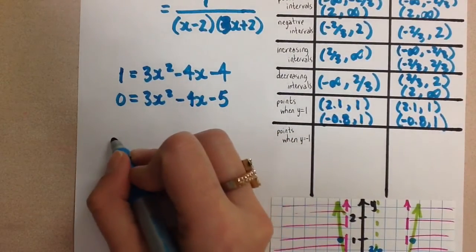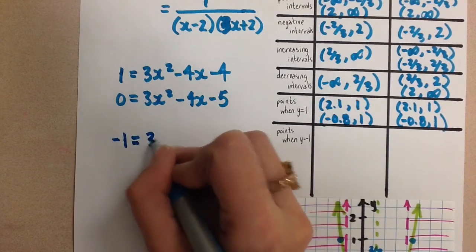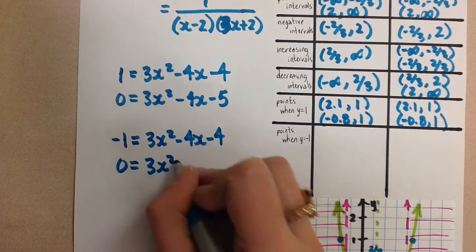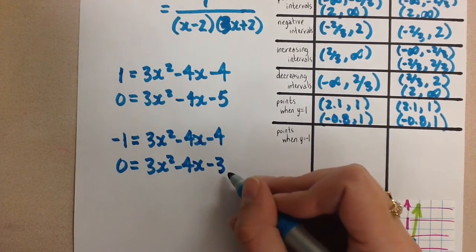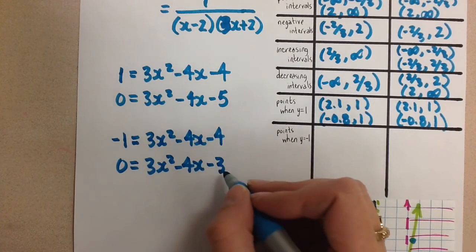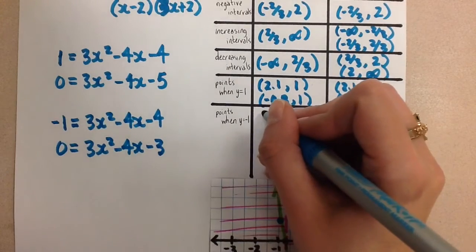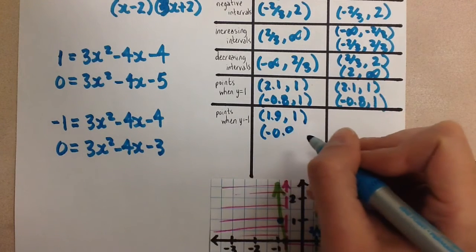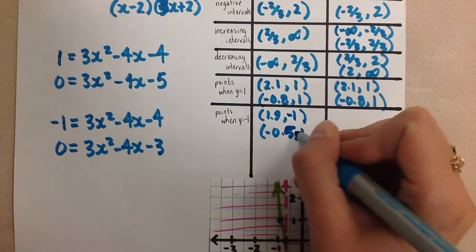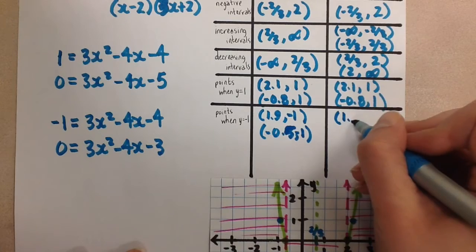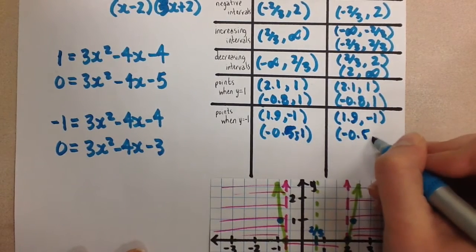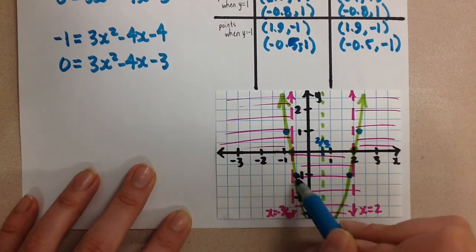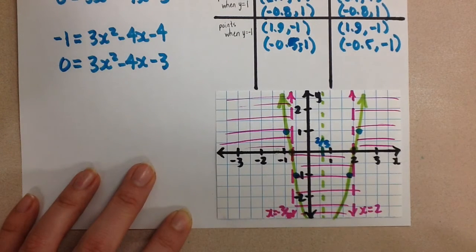For when y equals negative 1, we do the same thing — substitute in and bring the 1 over to get a quadratic equation on one side. Again you can't factor it, so you use the quadratic formula to find the two x values. When you do that calculation, your points are approximately (1.9, −1) and (−0.5, −1). We copy those points over because they will also match for the reciprocal function.